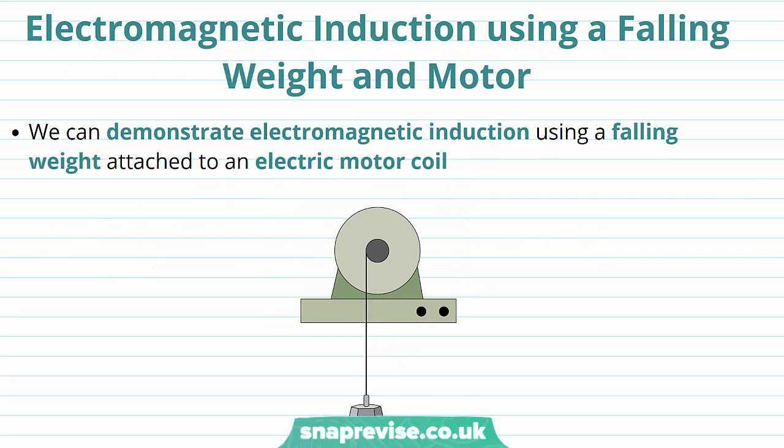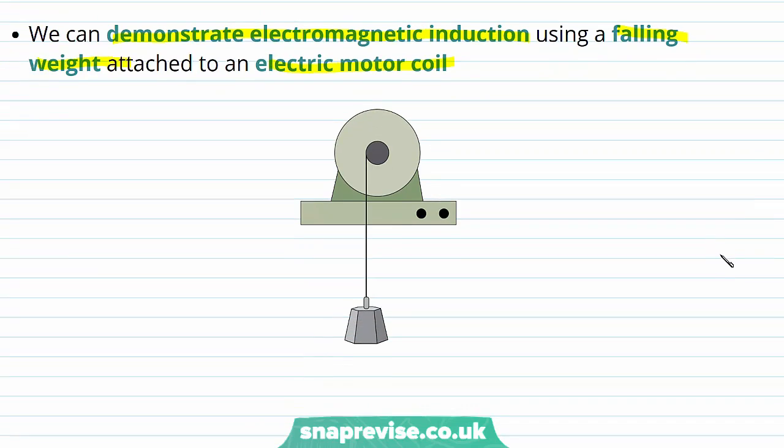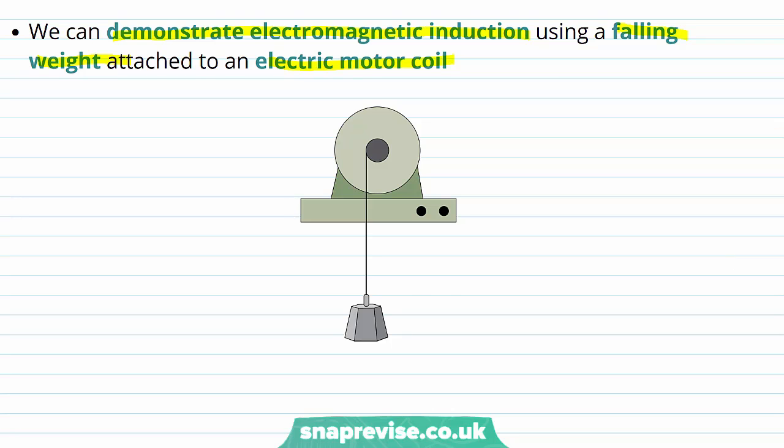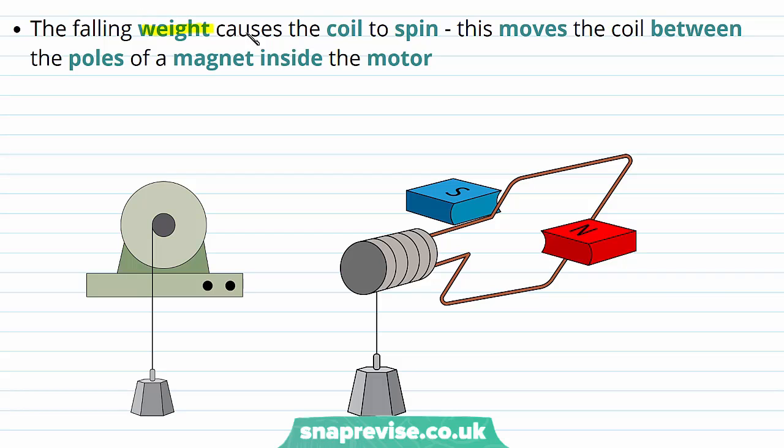Now let's look at the specific case of electromagnetic induction using a falling weight in a motor. We can demonstrate electromagnetic induction with a simple experiment using a falling weight attached to an electric motor coil. A weight is attached to a coil which is inside a motor. The weight is going to fall downwards, and this is going to lead to the coil turning inside the motor. The falling weight causes the coil to spin, and this moves the coil between the poles of a magnet inside the motor.